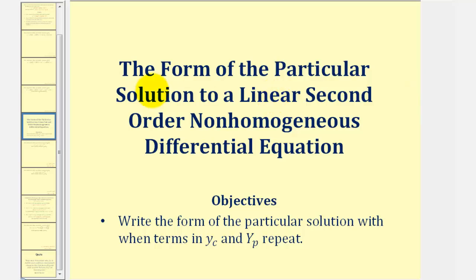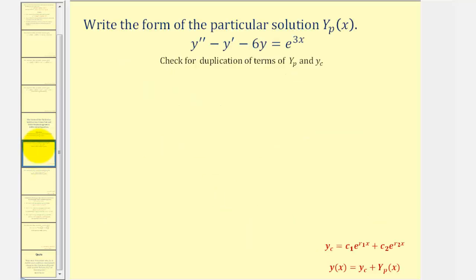Welcome to several examples on how to write the form of the particular solution to a linear, second order, non-homogeneous differential equation when terms in the complementary function and the particular solution repeat. In these problems, we're going to check for duplication of terms in the particular solution and the complementary function, where the general solution would be in the form y(x) = y_c plus y_p.